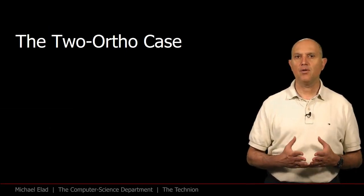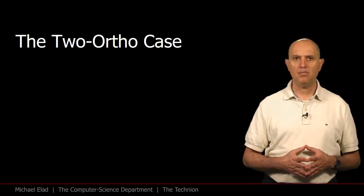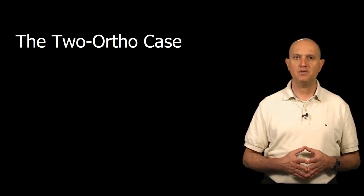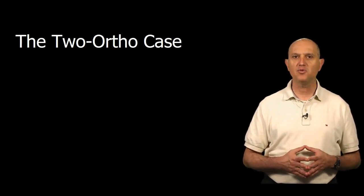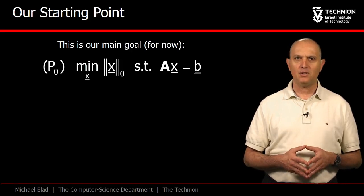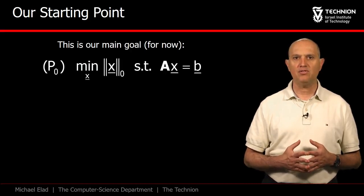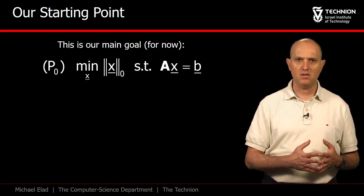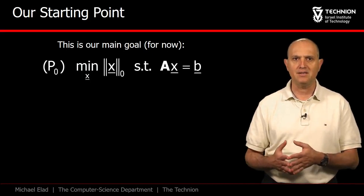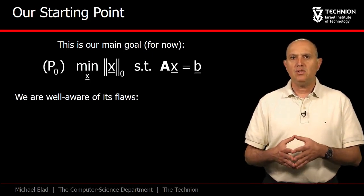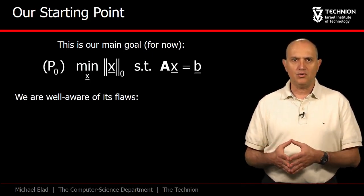We are moving now to a theoretical analysis of the P0 problem, and we will start with a very interesting special case known as the two-ortho. Our starting point is the problem we have defined as P0, seeking the sparsest solution of an under-determined linear system.